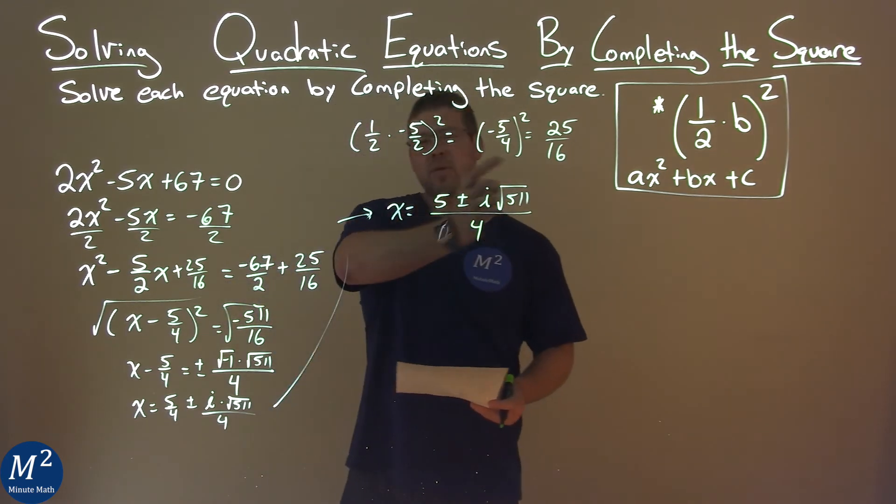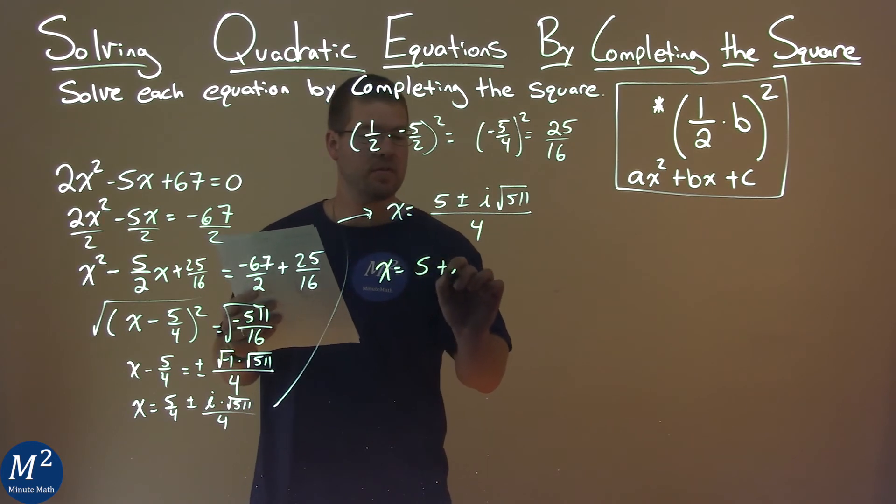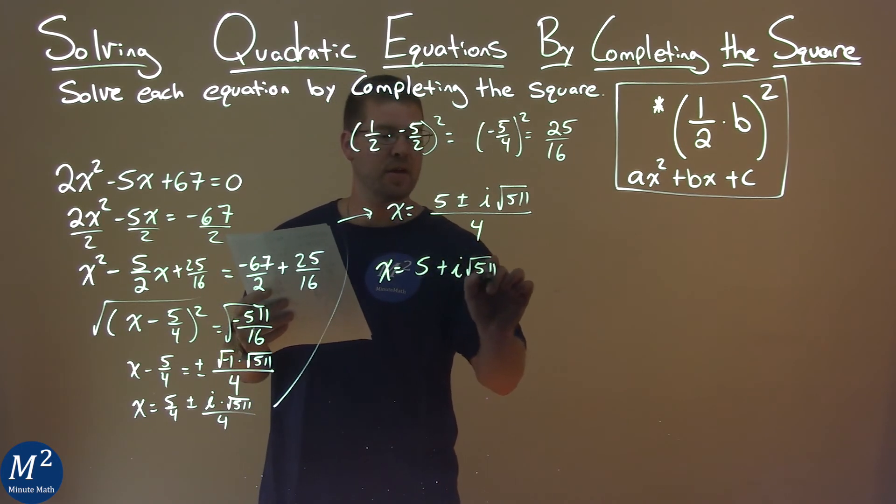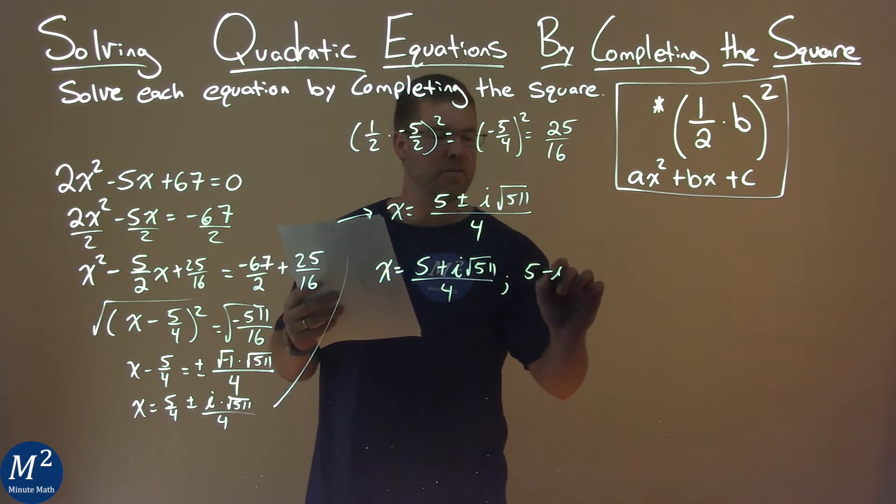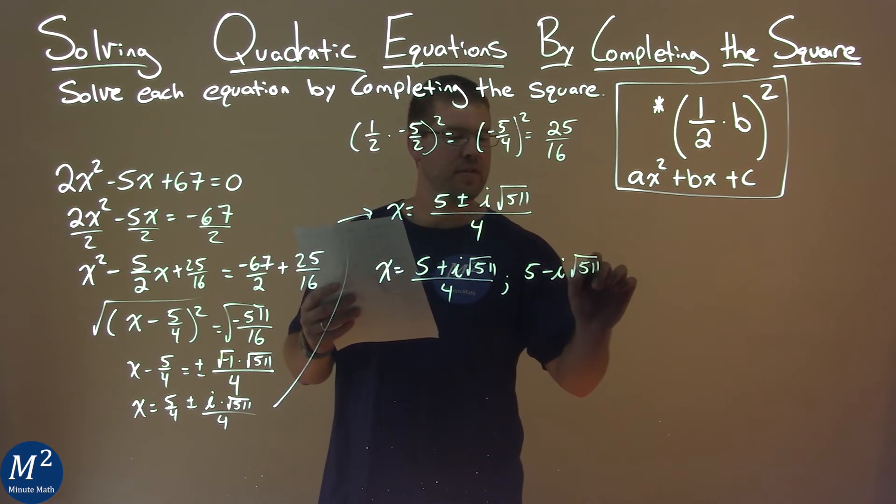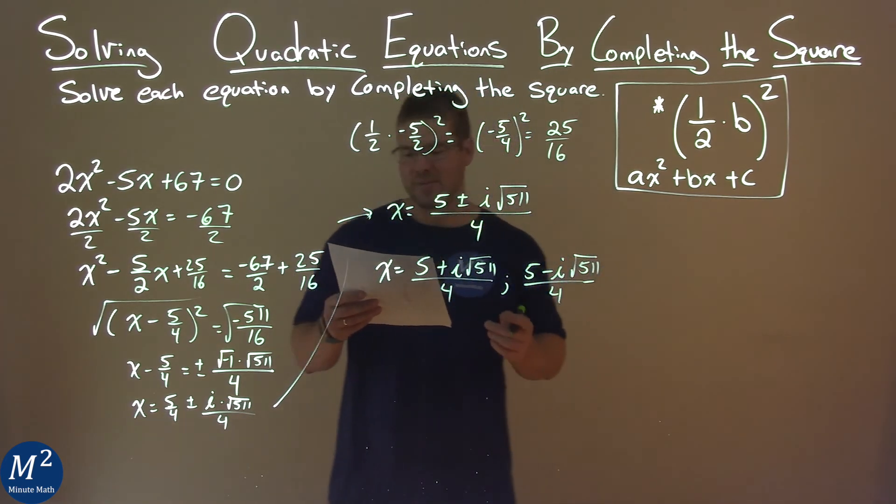Now that plus or minus really is two different numbers, so if we write that out, we have 5 plus i square root of 511 over 4, and 5 minus i square root of 511 over 4, and that is our final answer.